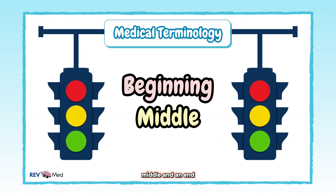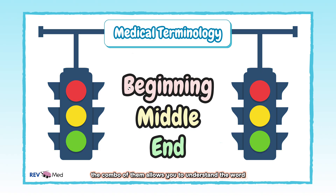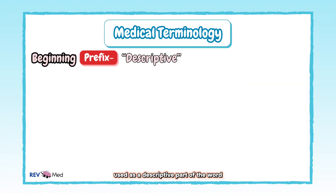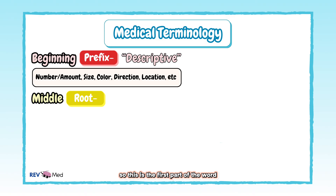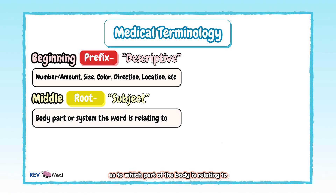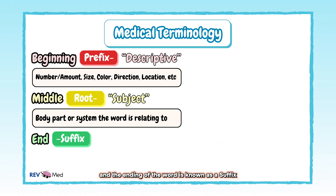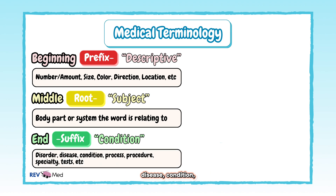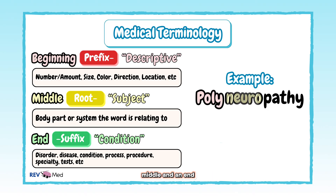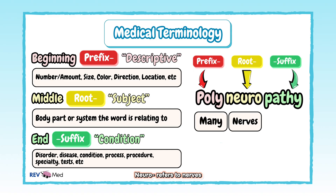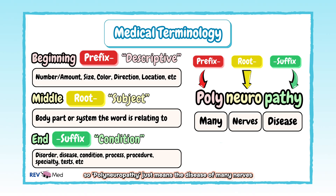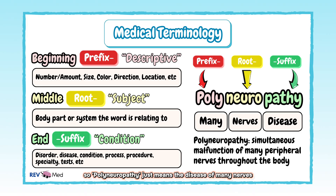We'll make medical terms easier by breaking down the words. Medical lingo has a beginning, middle, and an end — the combination allows you to understand the word. The beginning is known as the prefix, the descriptive part of the word — think number, amount, size, and color. The middle is known as the root, which is the subject of the word relating to which part of the body. The ending is the suffix — think condition, details, process, and procedure. For example: polyneuropathy — poly means many, neuro means nerves, and pathy means disease, so polyneuropathy means the disease of many nerves.